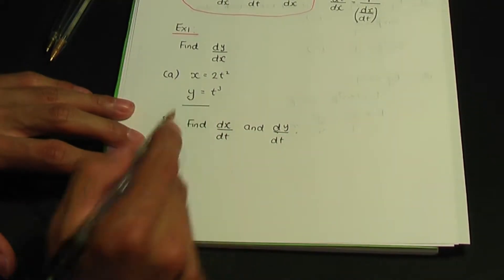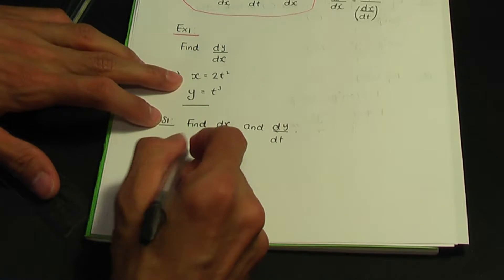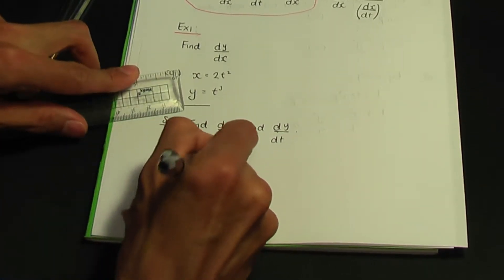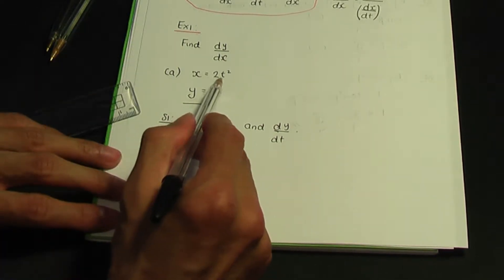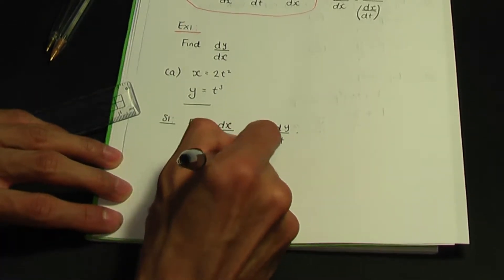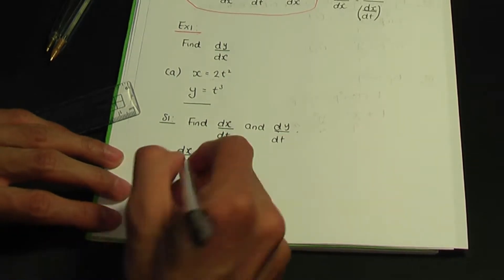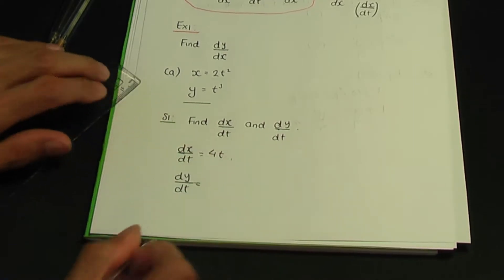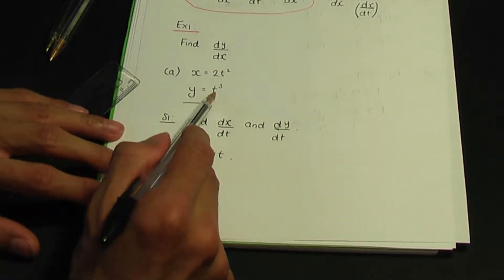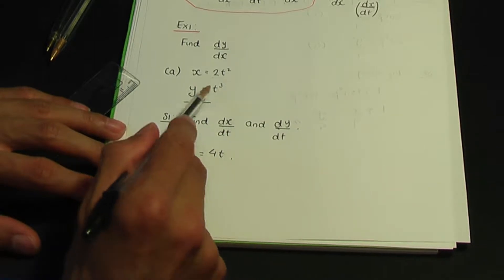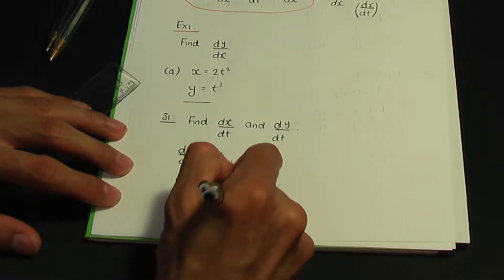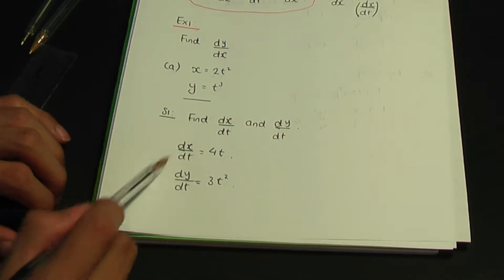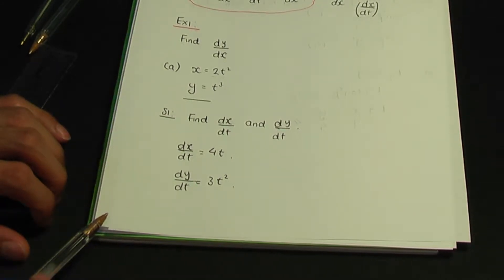Looking at our given equations: x equals 2t squared, so dx by dt, differentiating with respect to t, gives 4t. And y equals t cubed, so dy by dt gives 3t squared. That completes step one.